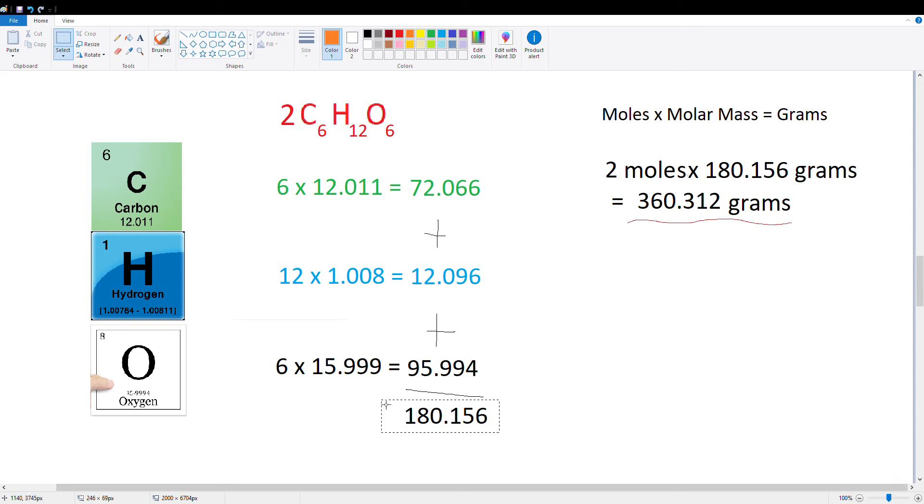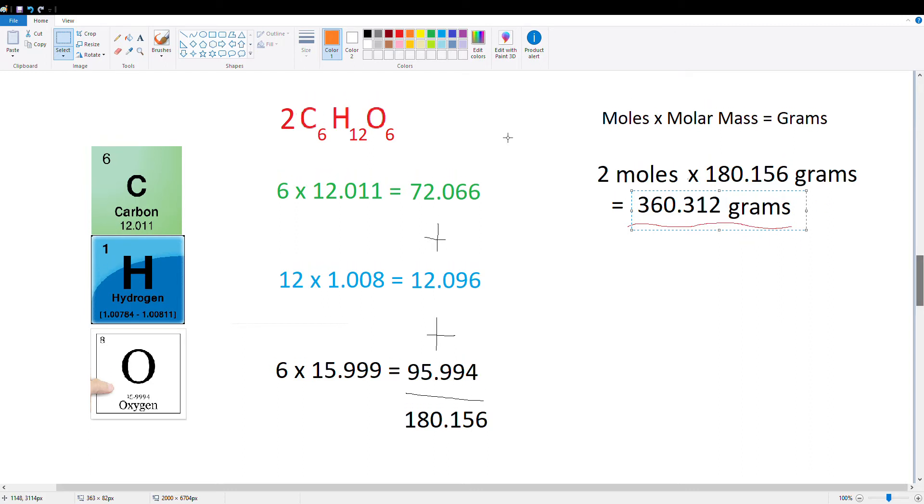So once we get this, now we're going to apply it in our equation, our formula here. So moles times molar mass is equal to grams. This time we have 2 moles. So 2 moles times our molar mass is equal to 360.312 grams. So this is the answer of the grams in this formula right here.